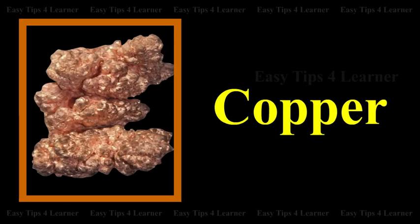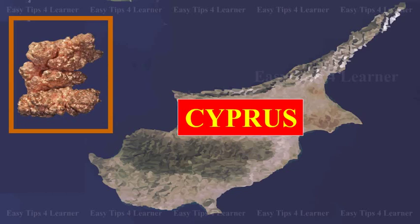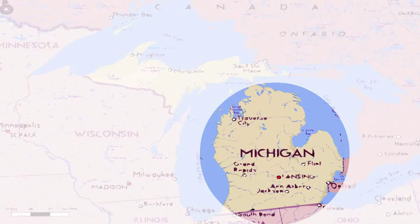Copper was known to the earliest races of mankind. It was named Cuprum by the Romans because they used to get it from the island of Cyprus. Copper is found in the native state as well as in the combined state. Native copper is found in large quantities in Michigan, i.e., in USA.